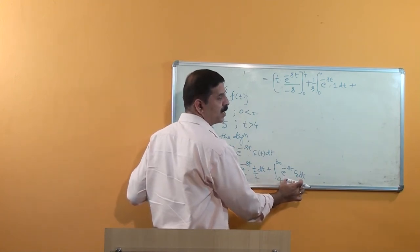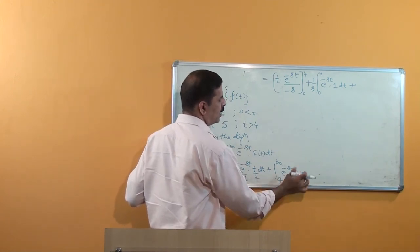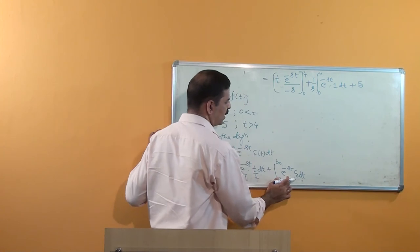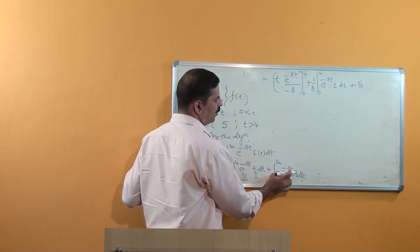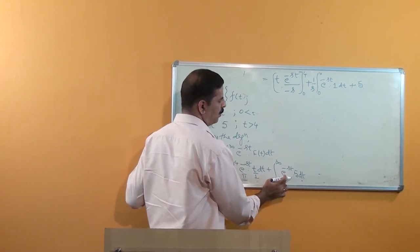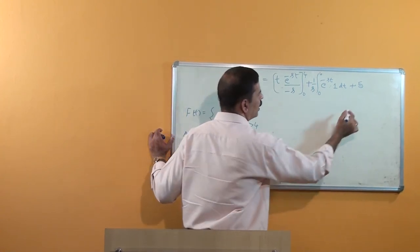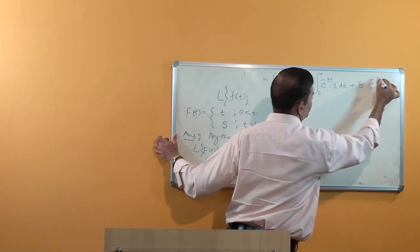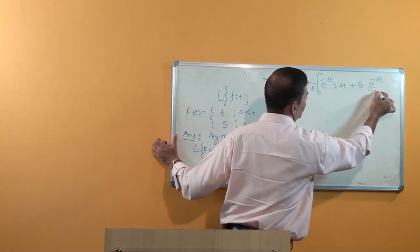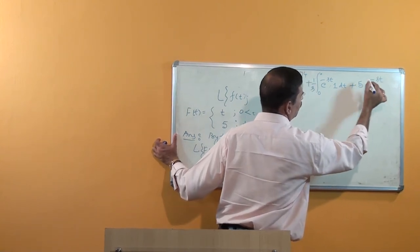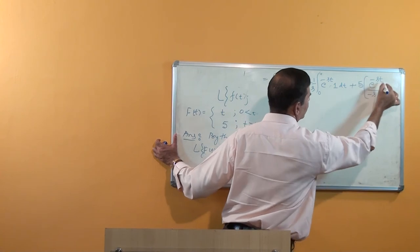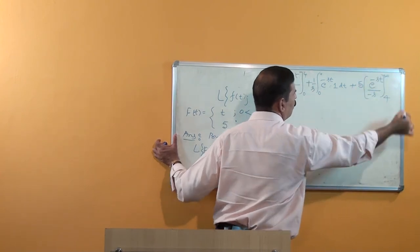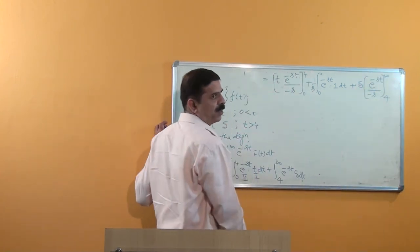For the second term, since 5 is a constant, we integrate e to the power minus st directly. The integral of e to the power minus st is e to the power minus st divided by minus s, so we get 5 times e to the power minus st divided by minus s, evaluated from 4 to infinity.